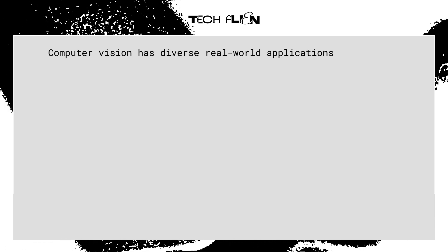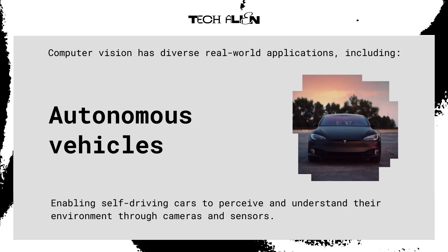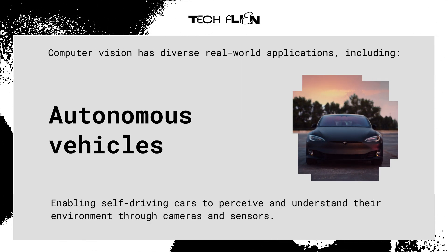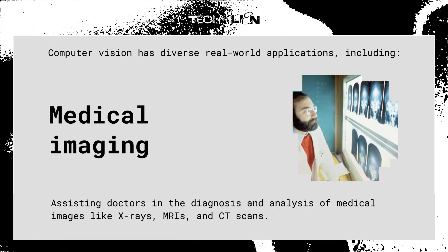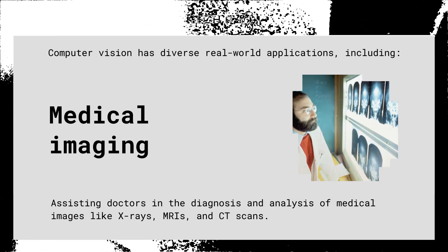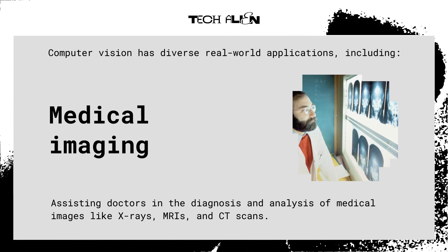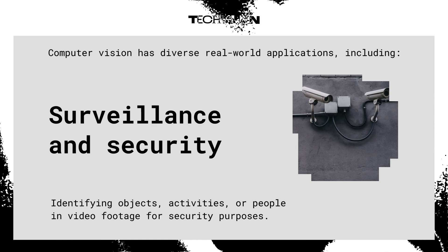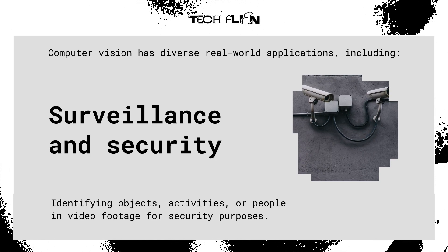Computer vision has diverse real-world applications, including autonomous vehicles — enabling self-driving cars to perceive and understand their environment through cameras and sensors. Medical imaging assists doctors in the diagnosis and analysis of medical images like X-rays, MRIs, and CT scans. Surveillance and security involves identifying objects, activities, or people in video footage for security purposes.